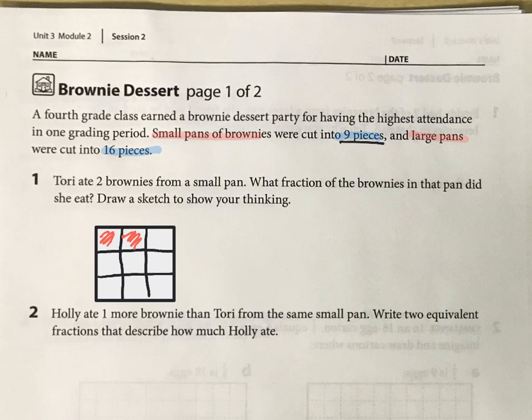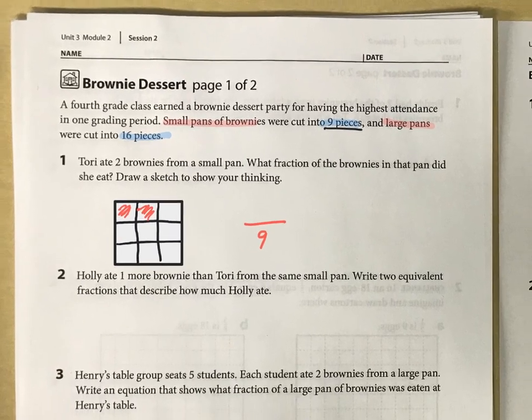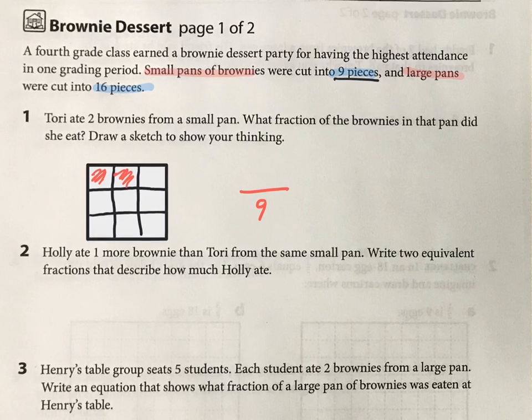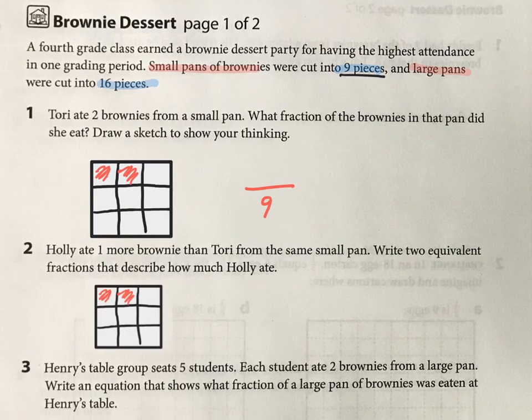So what is her fraction going to be? Well, there's nine pieces. How many did she have? Then Holly had one more than Tori did, so she had one more. So if that's what Tori had, then Holly had one more. So then you can do your fraction of the ninths; that should be easy.